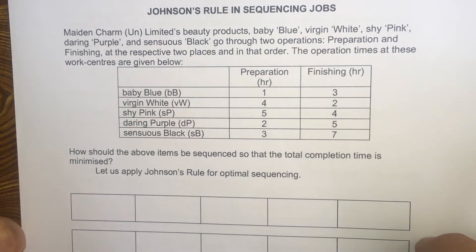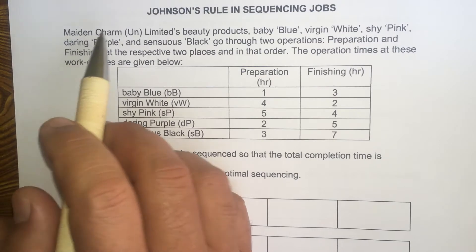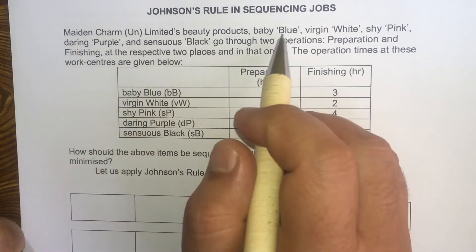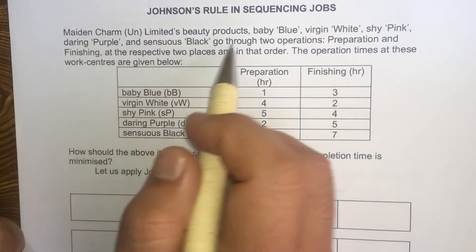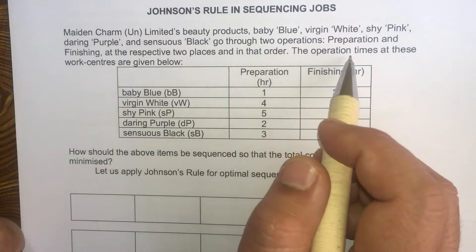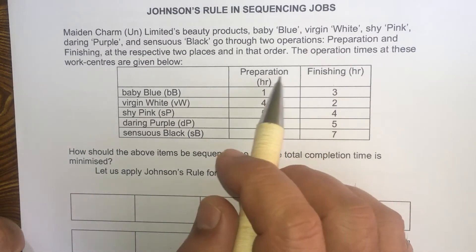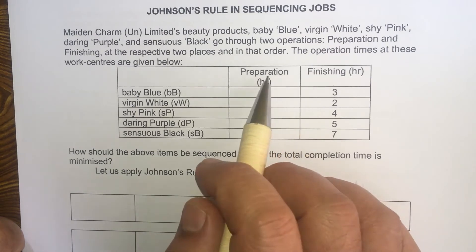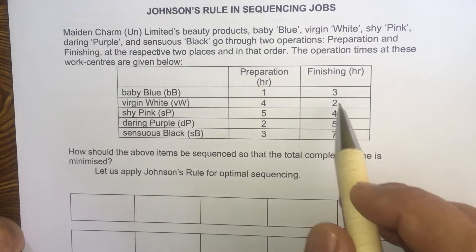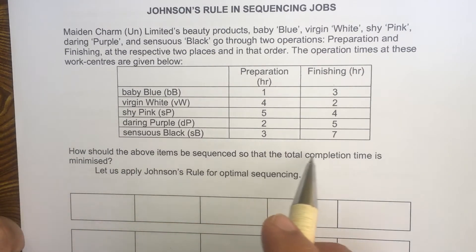Now let's look at this problem, which has been taken from the book Production and Operations Management by S.N. Chari. We are going to prioritize or sequence the jobs using Johnson's Rule. Maiden Charm Limited Beauty Products — Baby Blue, Virgin White, Shy Pink, Daring Purple, and Sensuous Black — go through two operations, Preparation and Finishing, at the respective two work centers and in that order. The operation times are given in hours. How should the above items be sequenced so that the total completion time is minimized?